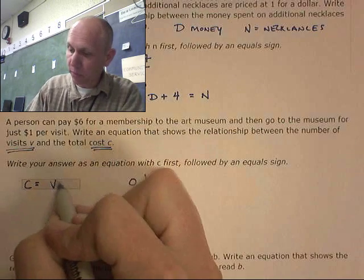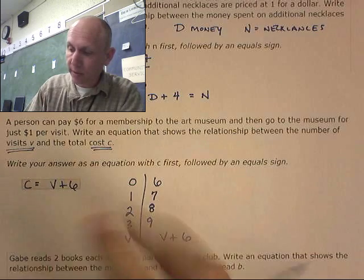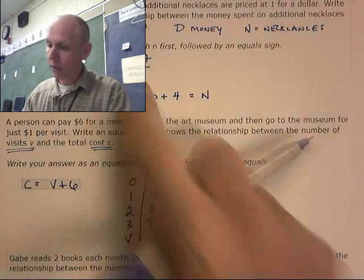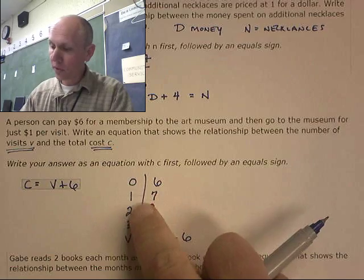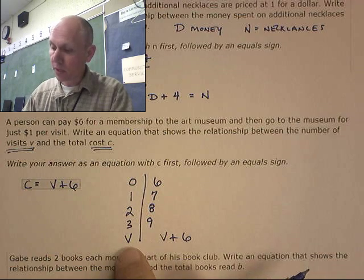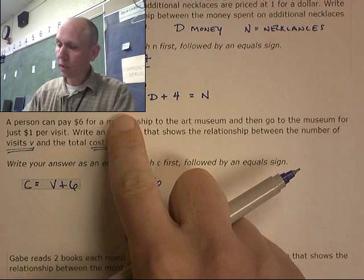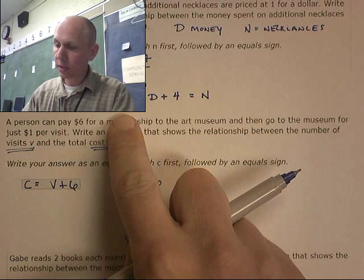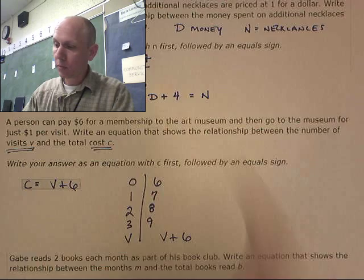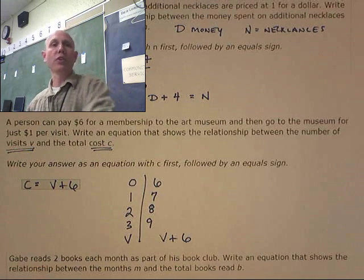Right, so the cost would be V plus six. Sorry, I was thinking about the one above it. So zero visits, one visit, two visits, three visits. V visits would cost V plus six dollars. Good. D dollars would cost how many necklaces? Oh, got it. Okay, just making sure.